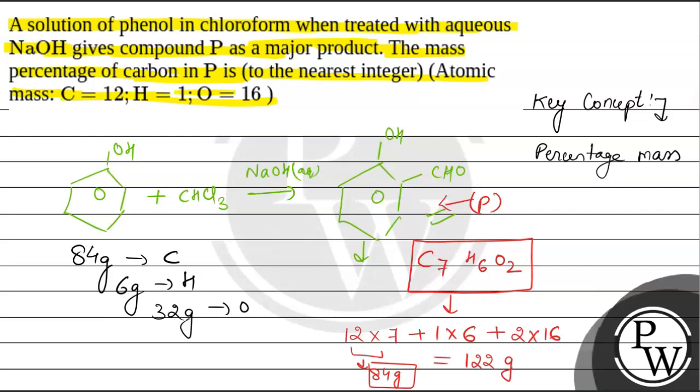So if we wish to calculate the percentage mass of carbon, it is mass of carbon which is 84 grams divided by total mass of compound which is 122 grams multiplied by 100. If we calculate this, it comes out to be 69 percent, and this is the required answer.